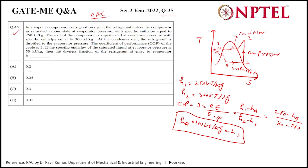In the problem it has been specified that the enthalpy at saturated liquid at the evaporator pressure is 50, meaning at point A, ha is given as 50 kilojoule per kg. So we have to find the dryness fraction of the refrigerant at the entry of evaporator, at point 4.